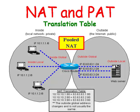In Static NAT, there is a manual assignment of public IP addresses to each internal machine, and that assignment is used all the time. Dynamic NAT uses public addresses and assigns them on a first come first serve basis. Both Static and Dynamic NAT require that enough public IP addresses are available to satisfy the total number of simultaneous sessions.